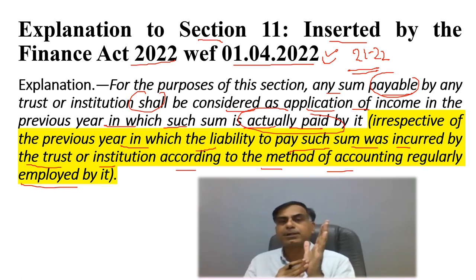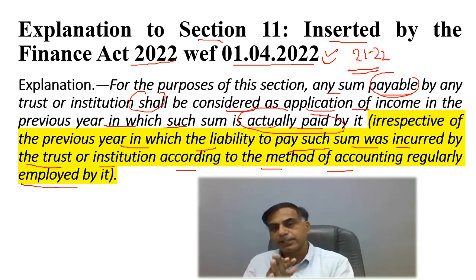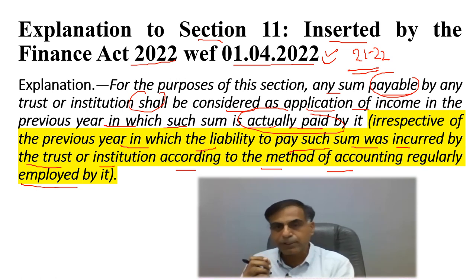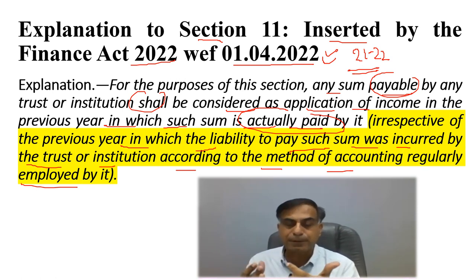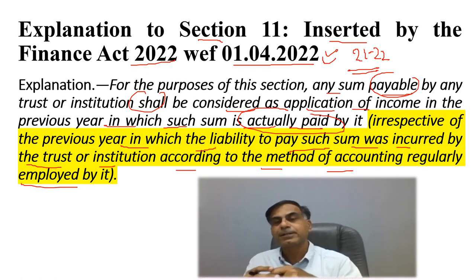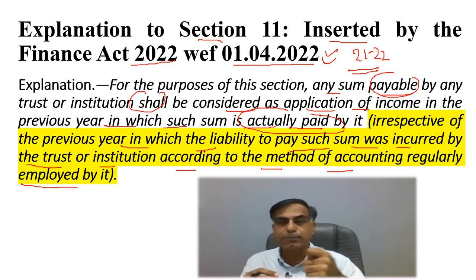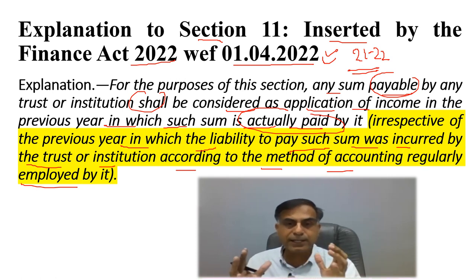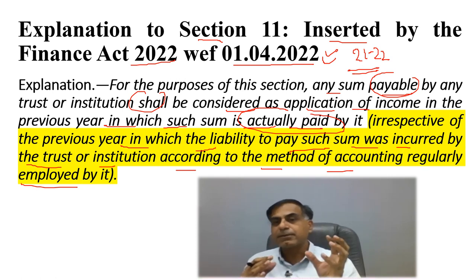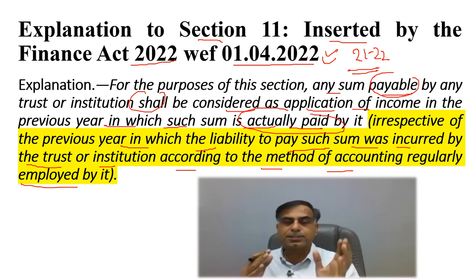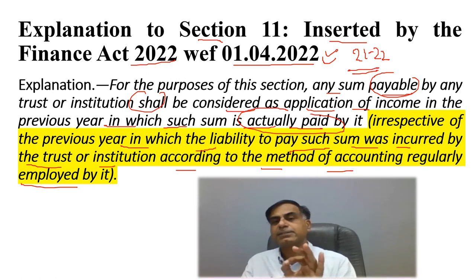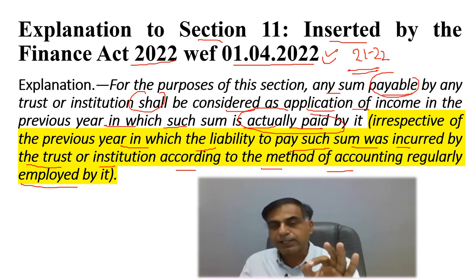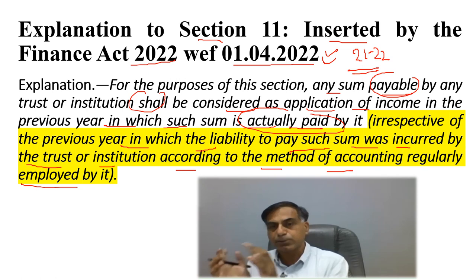This kind of amendment may be treated as similar to Section 43B of income tax law, which says that certain payments are allowed on actual payment basis. But here, in the case of a charitable or religious institution registered under Section 12AA or 12AB, the point is very clear — the income tax department will recognize an expense only when it is actually paid, with effect from assessment year 2022-23.